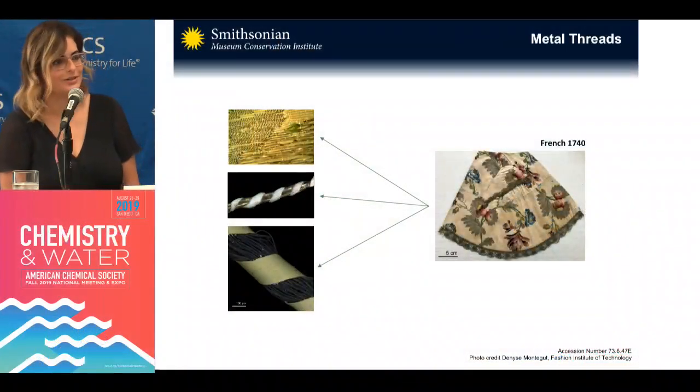Thank you for having me here to talk about some of the research that's been going on at the Smithsonian. At the Museum Conservation Institute, we're part of a large collaborative effort where we've been focusing on the analysis of decorative metal threads. We're doing this by analyzing all of the different components — everything from the metal to the fibers, the proteins in the membranes and adhesives as well. To introduce exactly what metal threads are: